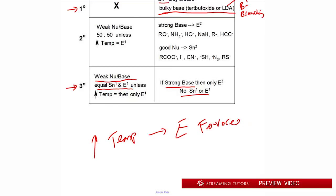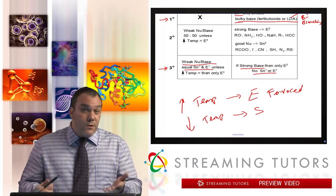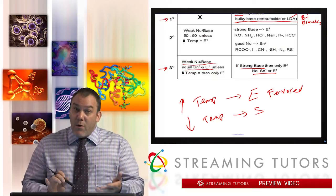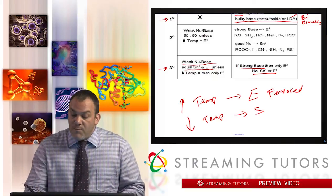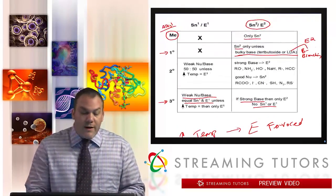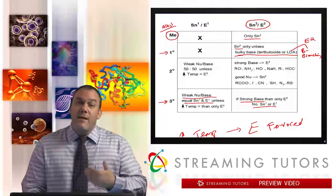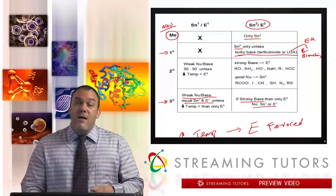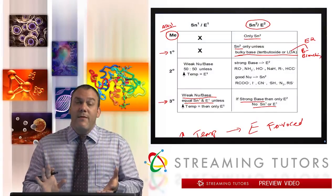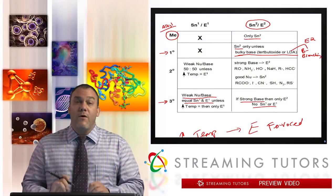Whenever you have an increase in temperature, that means that E is favored. So increase in temperature, E is favored. Decreased temperature, S is favored. SN1, SN2 depends upon the condition. E1, E2 depends on the condition. So if you have a tertiary alkyl halide with high temperature and it's water, for example, it would be E1 as the major product. But the high temperature has got to be there. They have to write high temp or something.